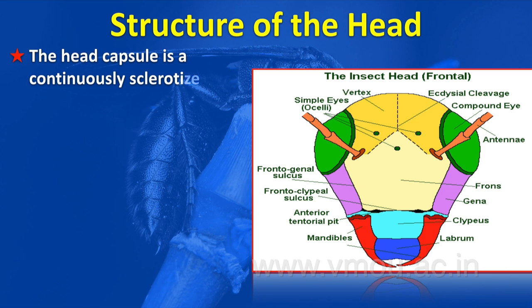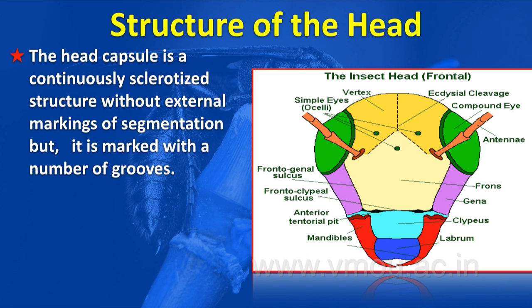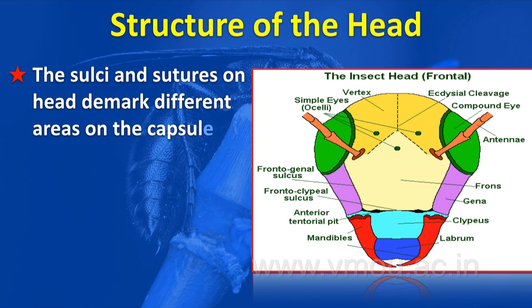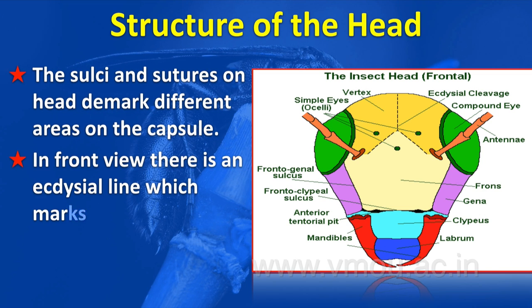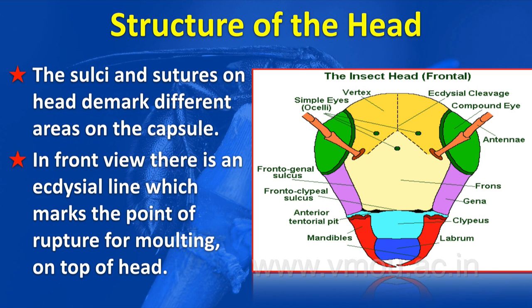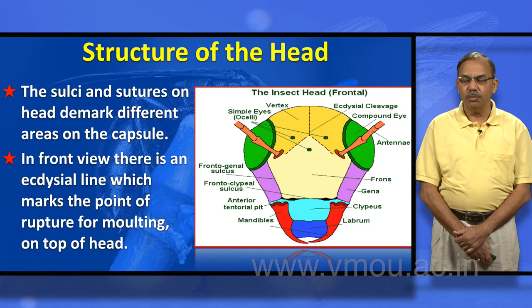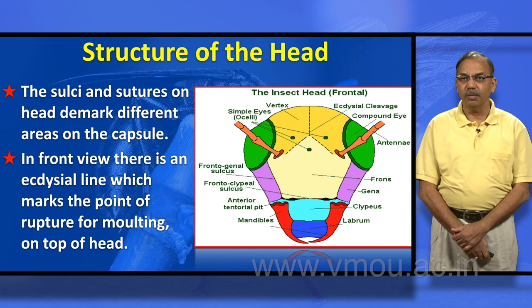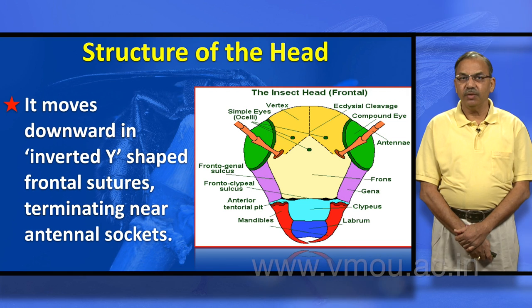The head capsule is a continuously sclerotized structure without external markings of segmentation, but it is marked with a number of grooves — on the top, lateral side, and posterior side. Some of these grooves are merely superficial sulci on a single plate, while others are sutures made by the junction of two or more plates. The adfrontal line marks the point of rupture for molting on top of the head.